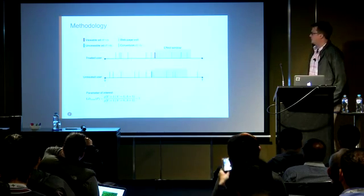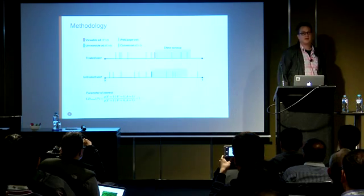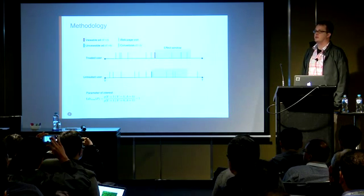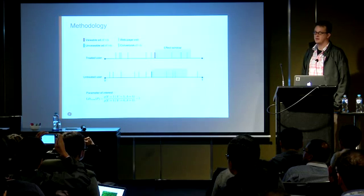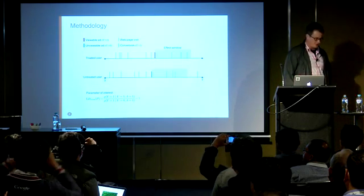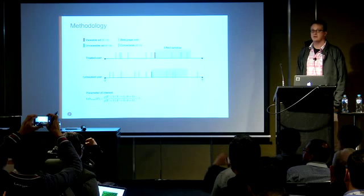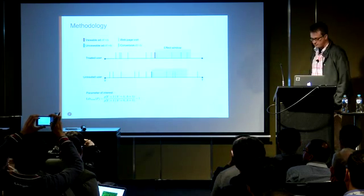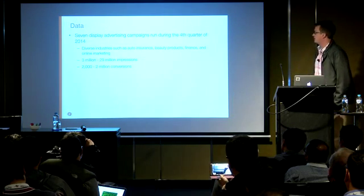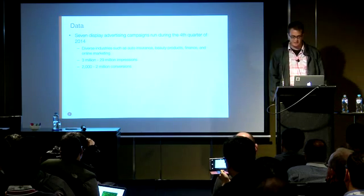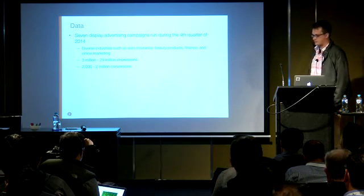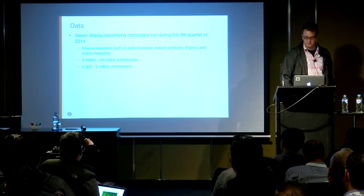Just to talk a little bit about our methodology: what we did was separate users who received campaign ads into two groups — one where the ad we measured to be viewable, and another where we measured the ad to be unviewable. If this measurement of ad viewability is a true natural experiment, then comparing the two groups should give an unbiased estimate of the performance of the campaign. The dataset we analyzed came from seven advertising campaigns from Q4 2014, from diverse industries, with millions of impressions per campaign and thousands of conversions per campaign.